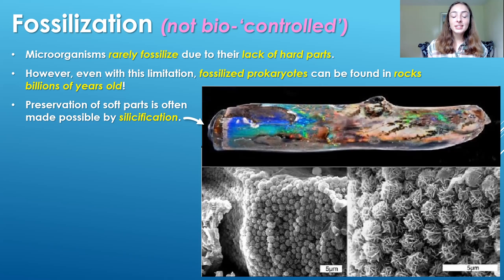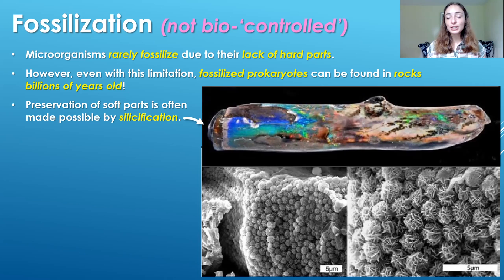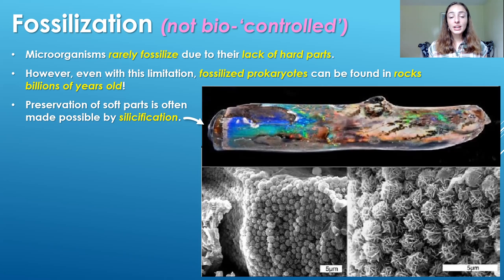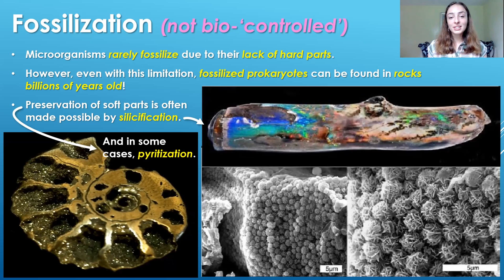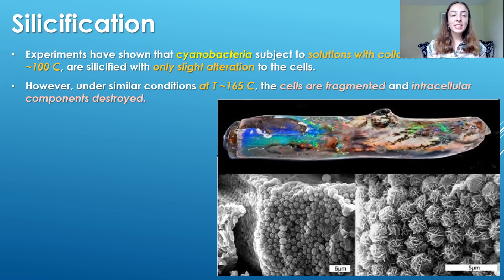One process we'll talk about is silicification — I show an example here of silicified wood with spheroidal silica grains that caused the silicification. We'll also talk about calcification, calcium phosphate preservation, and pyritization. So let's get into silicification.